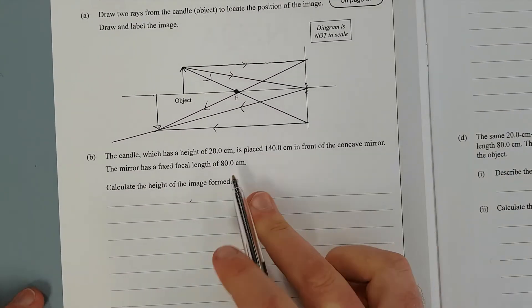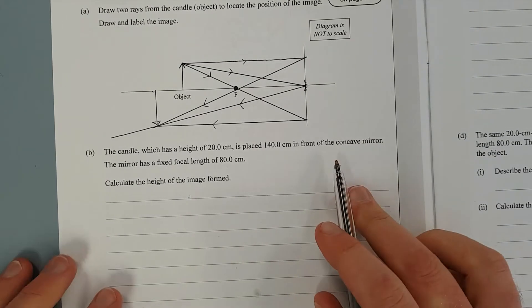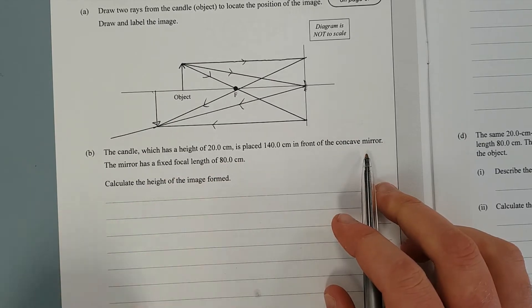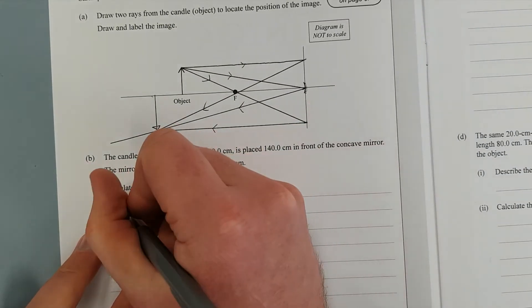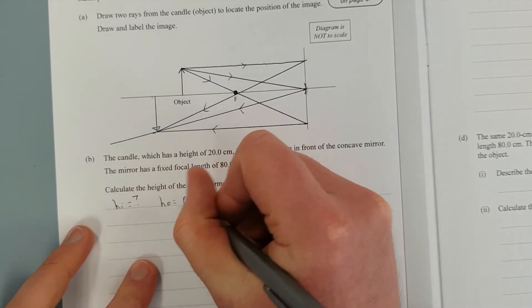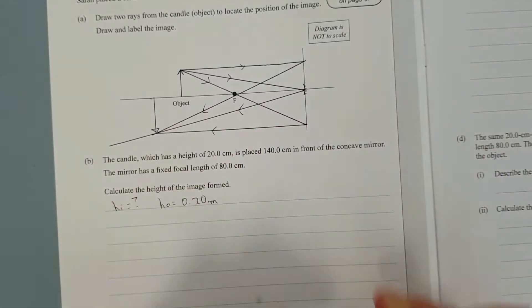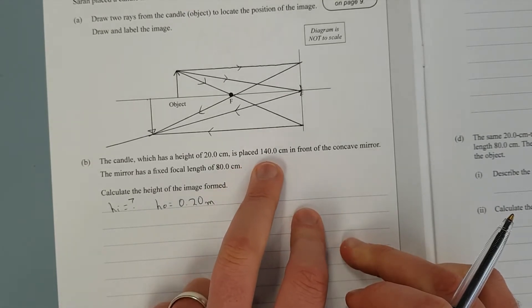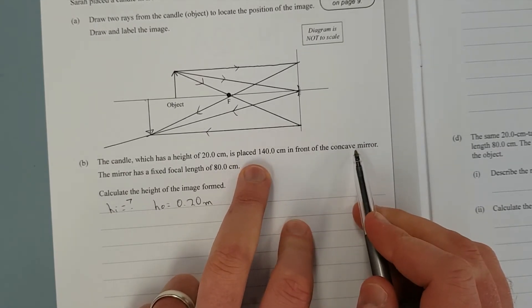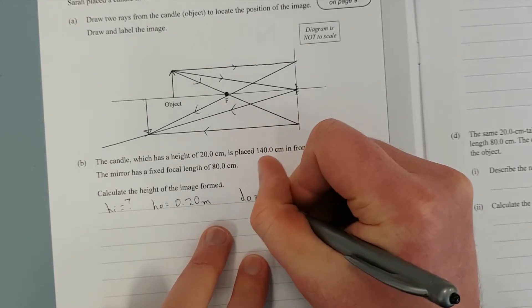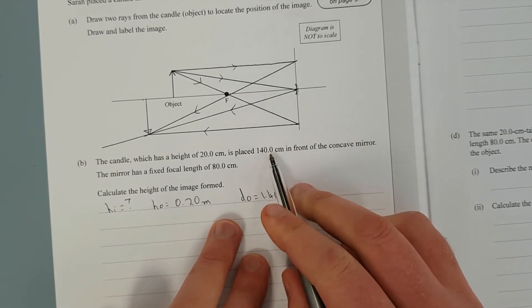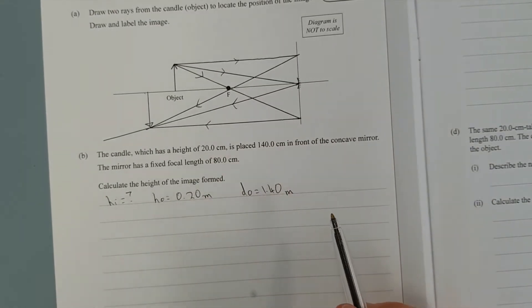The candle which has a height of 20cm is placed 140cm in front of a concave mirror. The mirror has a fixed focal length of 80cm. Calculate the height of the image formed. So what we're going to try and find is HI equals question mark. I have HO is equal to 0.20m because I do everything in meters.